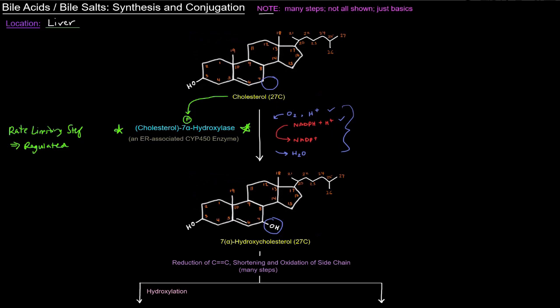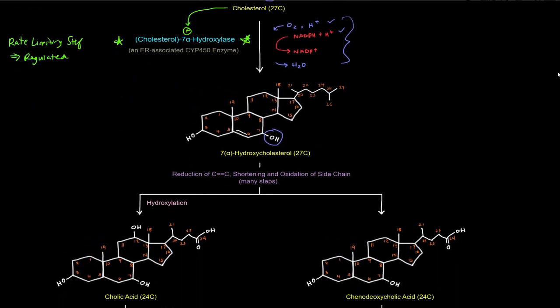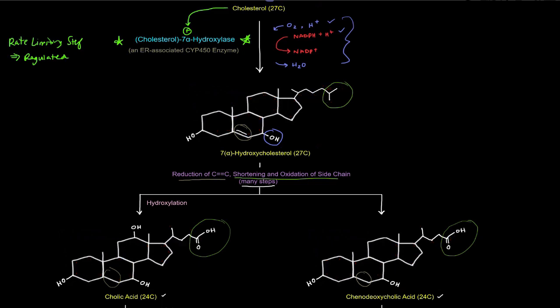A series of reactions end up giving us the bile acids: cholic acid and chenodeoxycholic acid. These molecules have only 24 carbons, so a few things happen along the way — many steps not all shown. The carbon-carbon double bond present in cholesterol is reduced and is no longer there. The side chain is shortened and oxidized — we go from 27 carbons down to 24 — and we now have a carboxylic acid group. In getting cholic acid, there is also an additional hydroxylation, which is not the case in chenodeoxycholic acid.